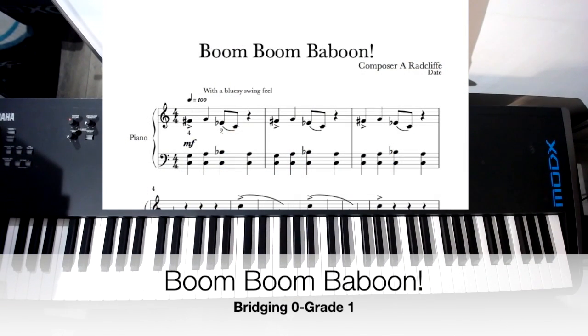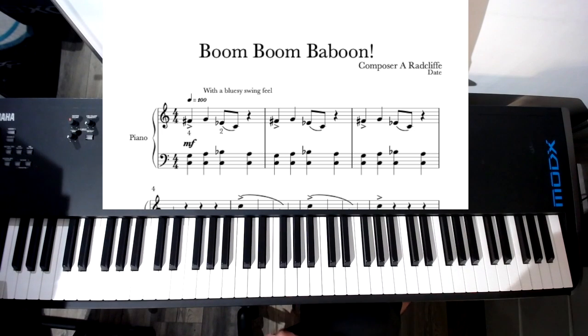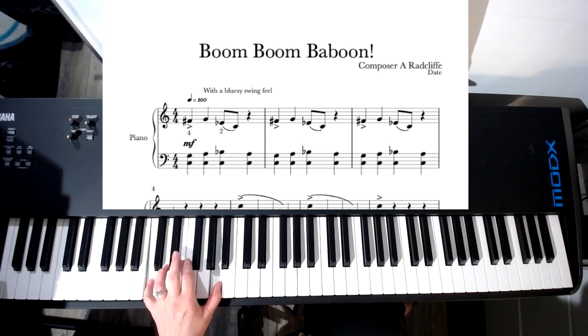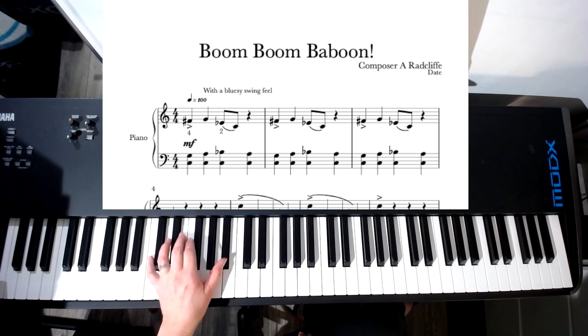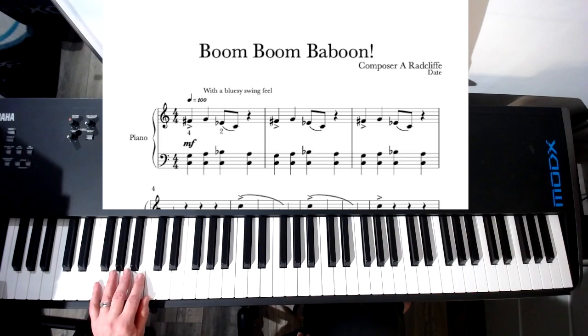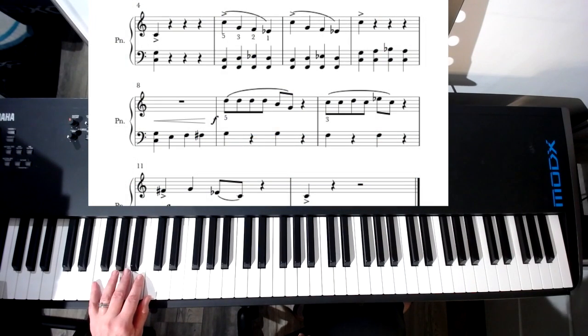Boom Boom Baboon! So let's start with the left hand. The left hand has got a nice boogie going on, just use five and one, and your thumb is moving up in a nice boogie pattern. That's the first position, C and G. The second hand position on the second line goes to F and C.